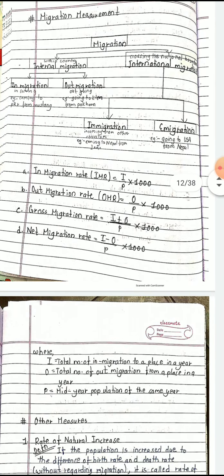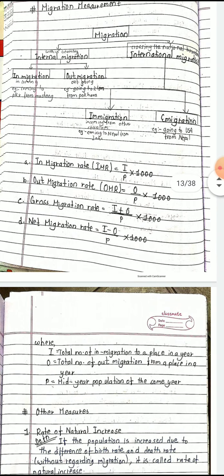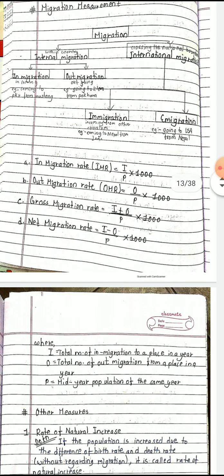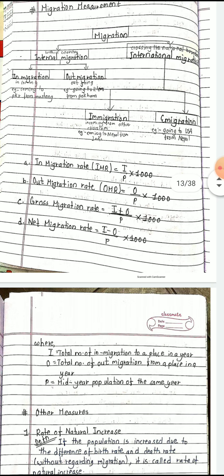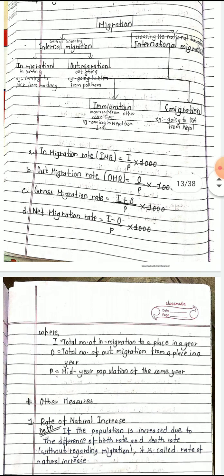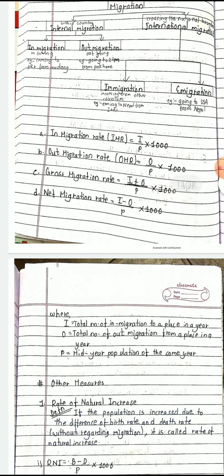A simple trick to remember: 'Net' starts with 'N,' which indicates negative — so net migration uses I minus O. 'Gross' relates to grand total, meaning we add — so gross migration uses I plus O. Migration measurement problems have been asked in the SEE examination many times and are important for preparation.